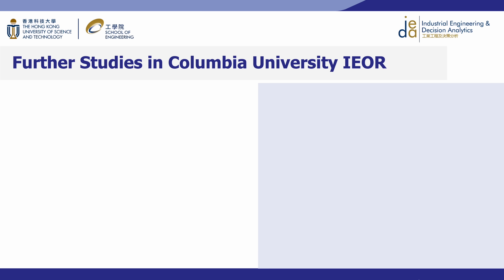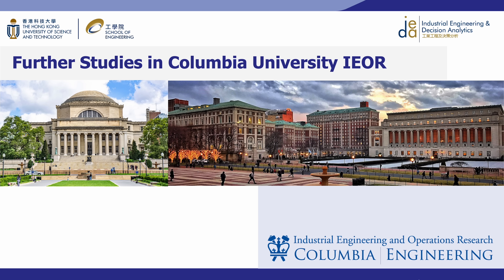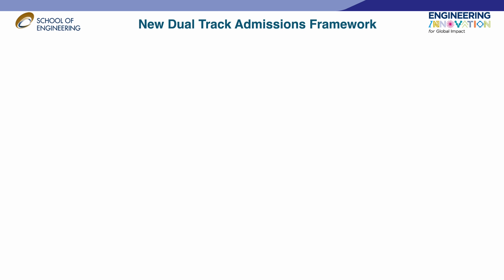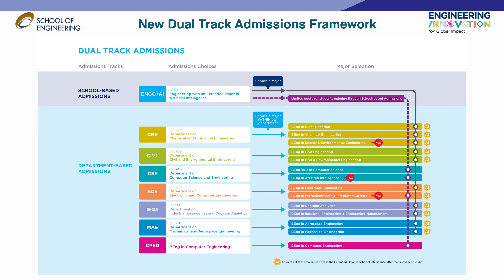Students will also be encouraged to continue their studies. We have signed an agreement with Columbia University for a fast-track master program, which usually accepts applications in year three, and we recommend three to four outstanding students each year. If you are interested in majoring in IEDA from academic year 2025-26 onwards, you can admit via school-based admission or directly to the department via department-based admission, declaring your major in Decision Analytics or Industrial Engineering and Engineering Management after your first year at HKUST.